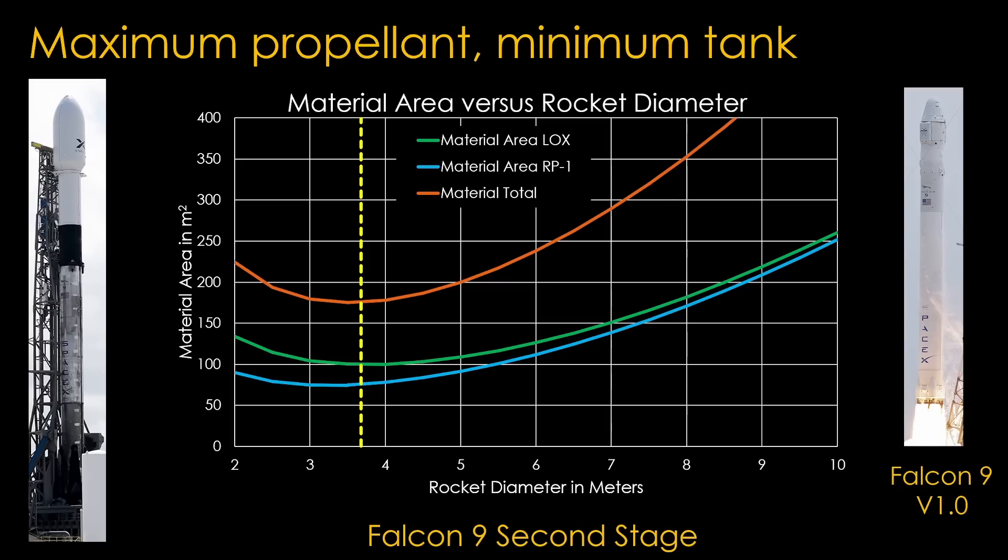Because SpaceX chose a small diameter rocket, using RP-1 for both stages was an excellent choice. If they'd chosen to use hydrogen, the stages would have been optimal at 5 meters in diameter, and therefore poor performance at 3.7 meters. Speaking of hydrogen, let's look at the Vulcan rocket from ULA.